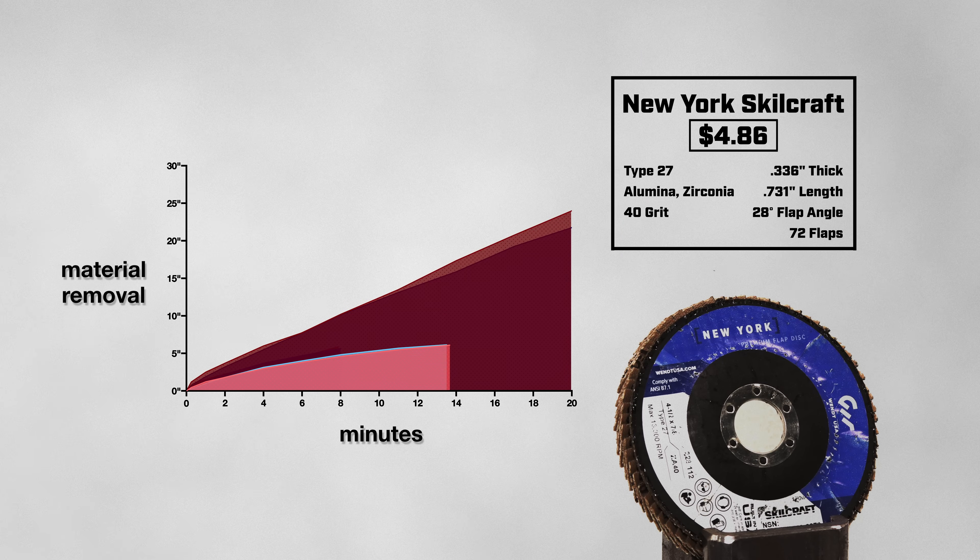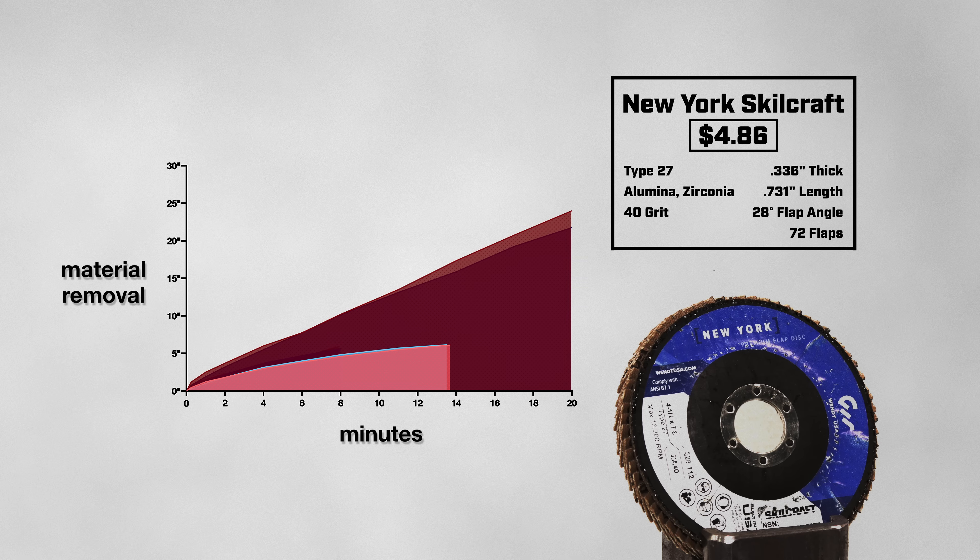So how should you use this disk to get the best results? Well, I would definitely apply heavy and even pressure when grinding with the New York. This will help it cut the most material, especially if done on a hot metal. Now it's up to you to decide if these results are worth the $4.86 price tag.